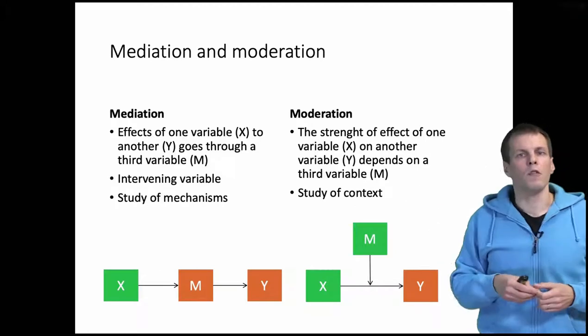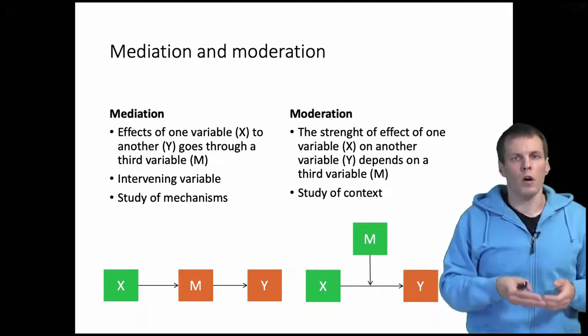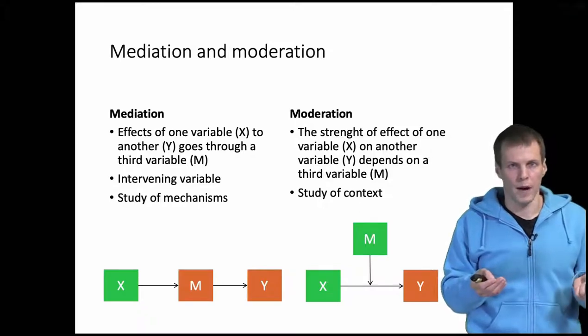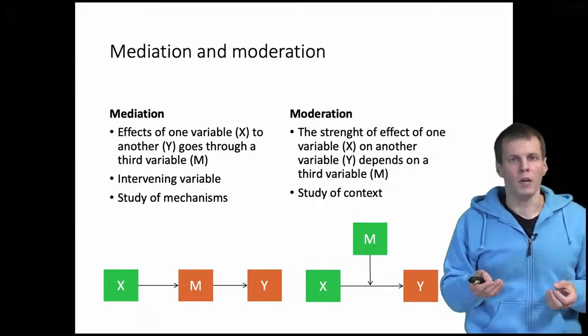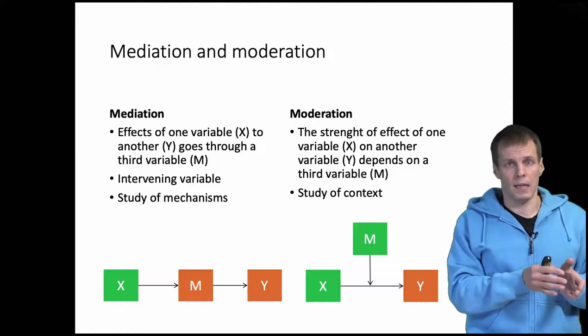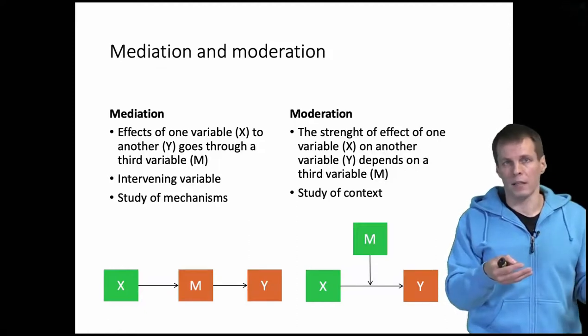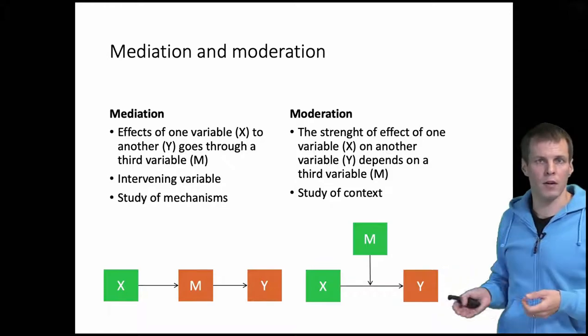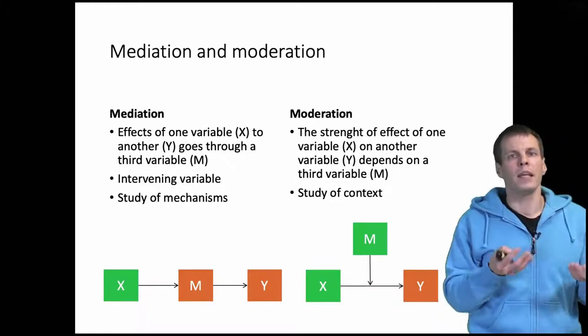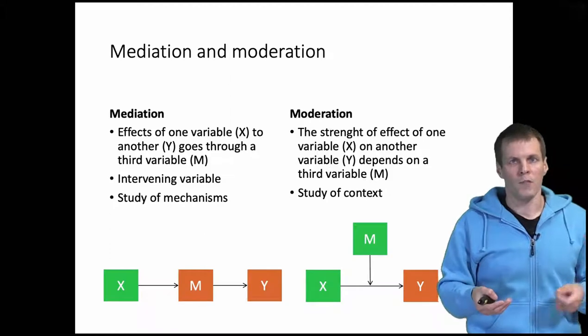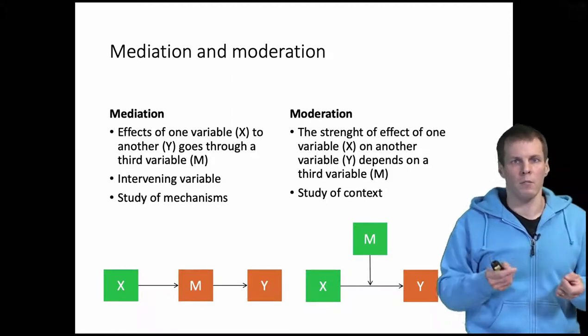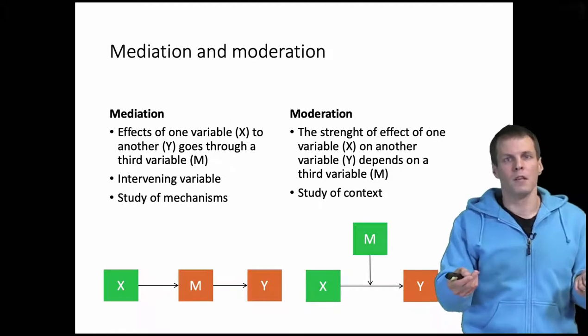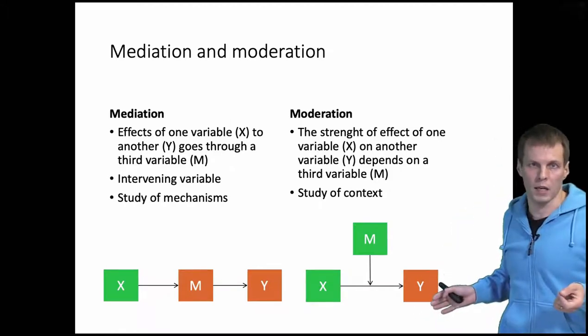Moderation, on the other hand, refers to a scenario where a third variable determines the strength of association between two variables. For example, if x is the amount of weight training that you do and y is the amount of gains that you have in muscle mass, then the moderator could be the amount of eating that you do. If you train and you eat a lot, you gain muscle. If you train equally much but you don't eat as much, then your muscle gains will not be as large.